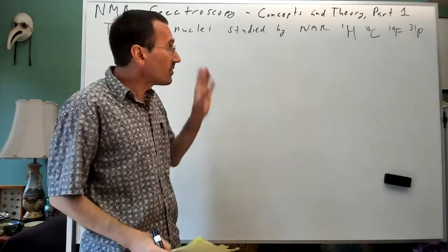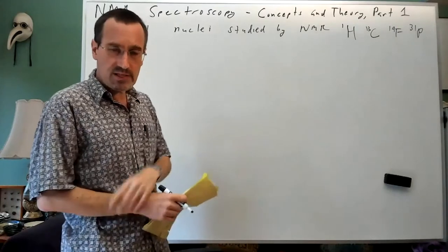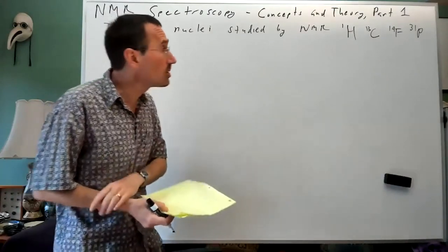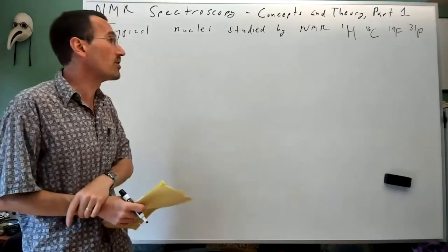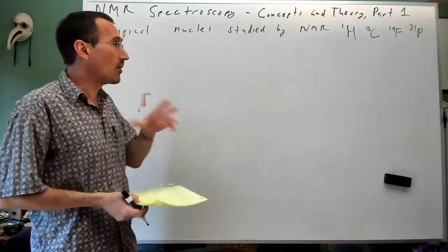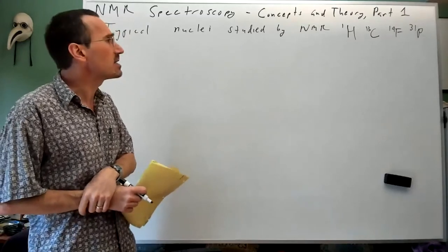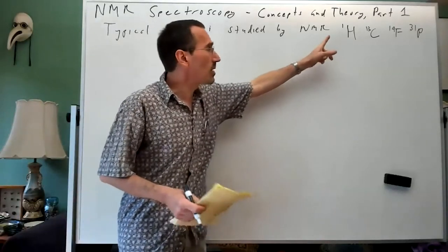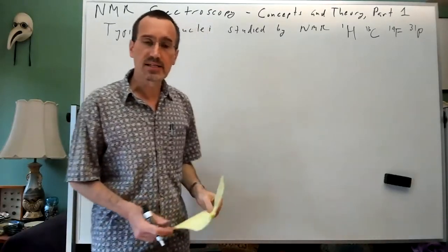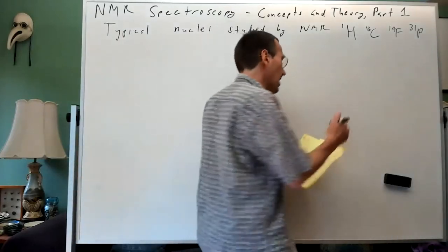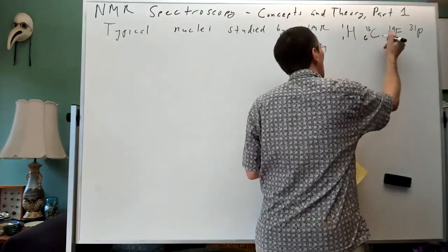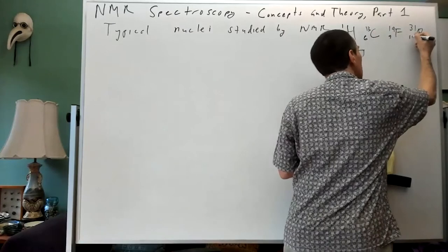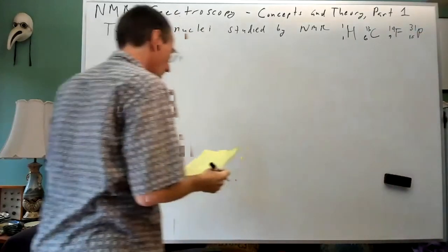I'm going to write in the mass numbers here. So C-13, F-19, P-31, H-1. In fact, all of these nuclei can often be done with a single NMR spectrometer in a single probe. I'm also going to write in the atomic number on these isotopes.